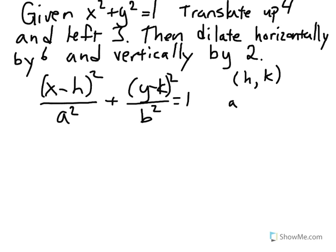The center point of the ellipse is going to be at the point h comma k. And a is going to be the horizontal scale factor and b is the vertical scale factor. For this example, since we were asked to translate up 4 and left 3,